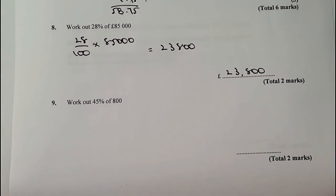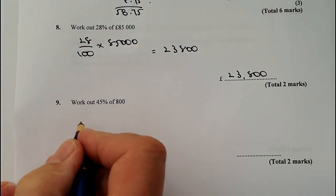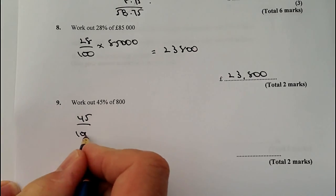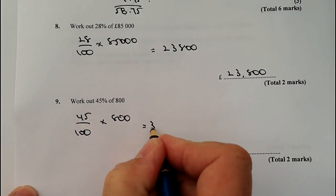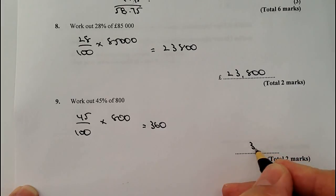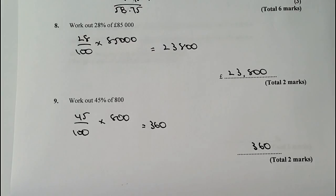The final question on this video is going to be 45% of 800. Again, similar to the previous question — you've got 45 out of 100 of 800. Plug that in your calculator and you're going to get 360. So 45% of 800 is 360. That's the first half of this video — it does get a little bit more complex in the next series of questions. Please do contact me if you need any help or support. I'll look forward to seeing you in the next video. Thank you.